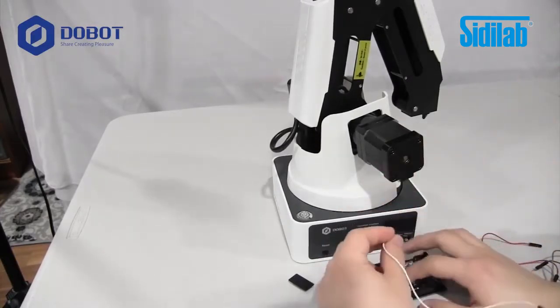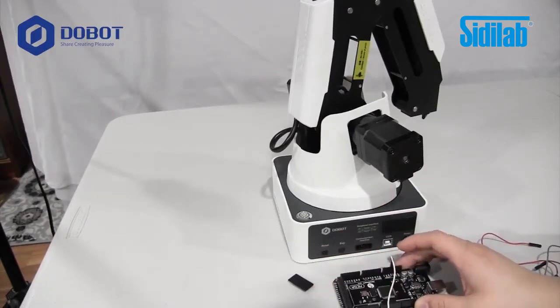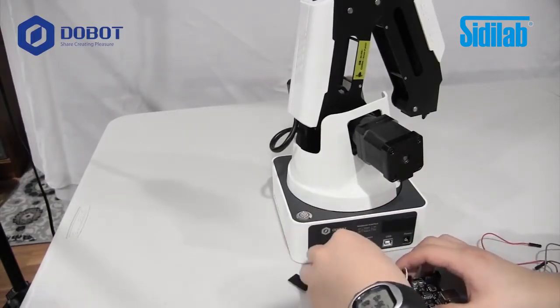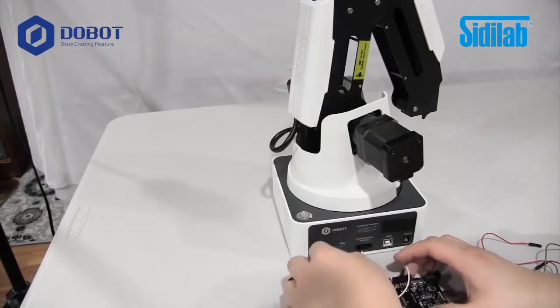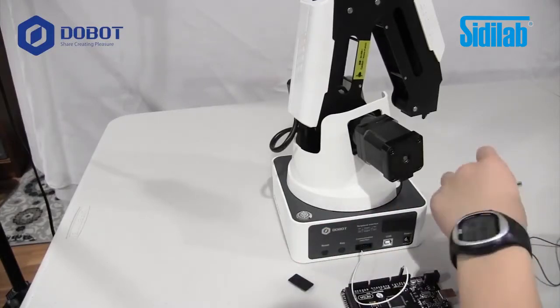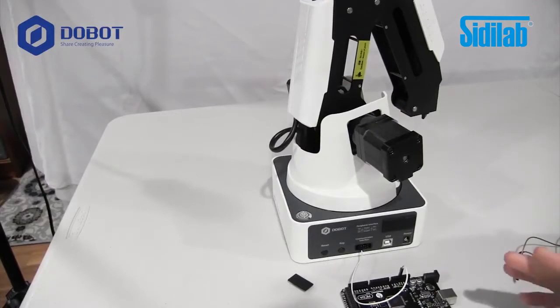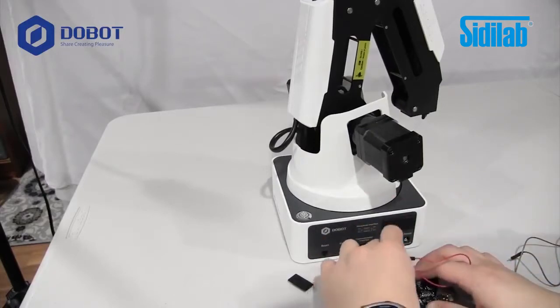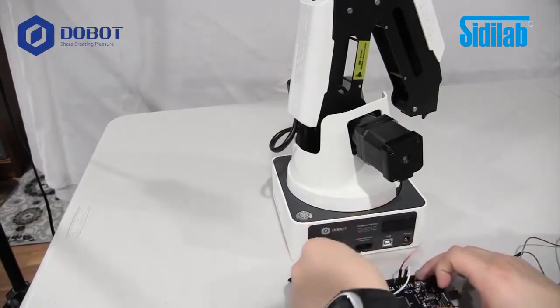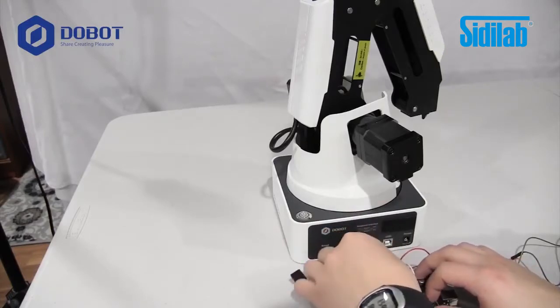So we'll take one wire, put it into five volts right here, plug it into the top left of the communication interface of the Dubot Magician. Take another wire, plug it into any of the GNDs, plug it into the port right below that, bottom left.